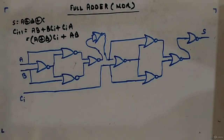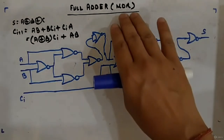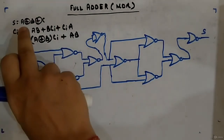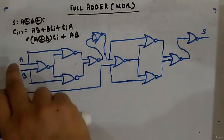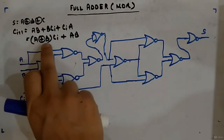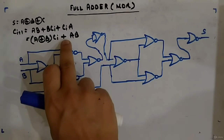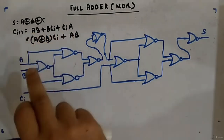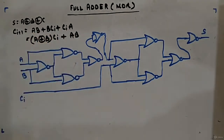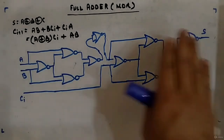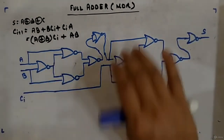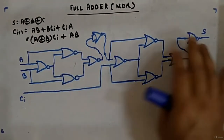Let's look at the full adder construction from NOR gates. The expressions are the same: sum is A XOR B XOR C, and carry out is AB plus BC plus CA, where C is carry in. This is how you make the sum output from NOR gates.